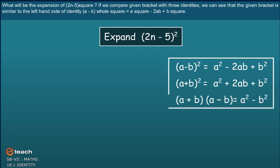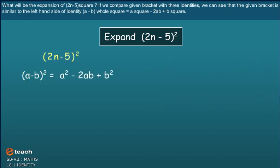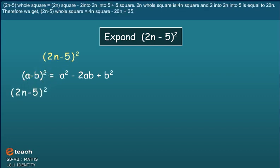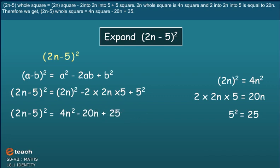What will be the expansion of 2N minus 5 whole square? Comparing the given bracket with the identities, we see it matches A minus B whole square equals A square minus 2AB plus B square. Applying this identity with 2N for A and 5 for B, we get 2N minus 5 whole square equals 2N whole square minus 2 into 2N into 5 plus 5 square, which gives 4N square minus 20N plus 25.